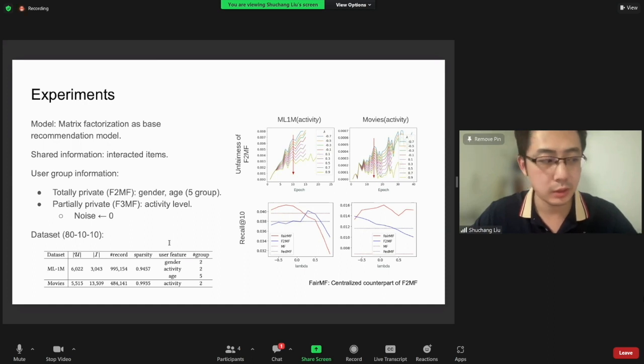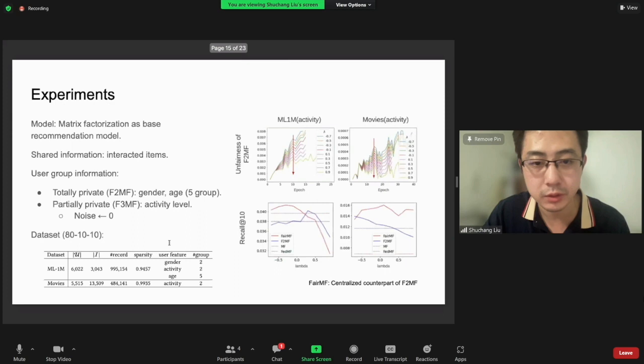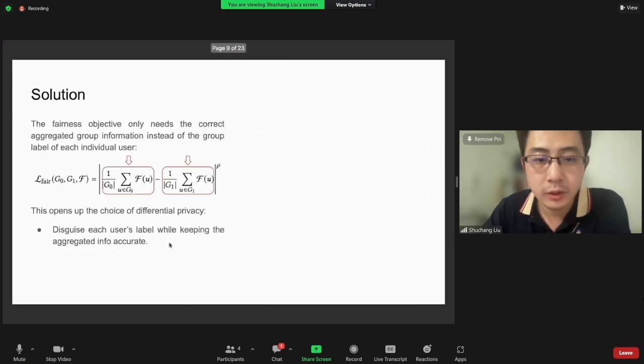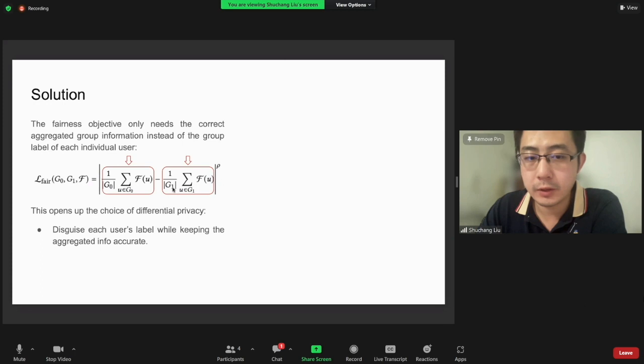But if you still want to do that, when you have a fairness loss defined in this way, you will have multiple groups that control their differences in a pairwise way. When that happens, you basically have groups that have larger differences that move faster.